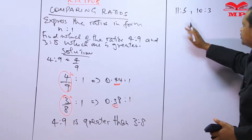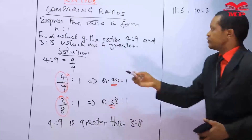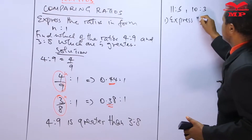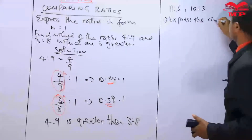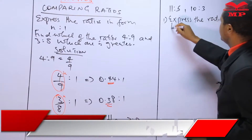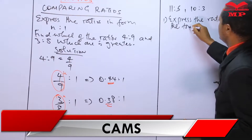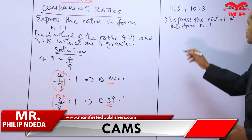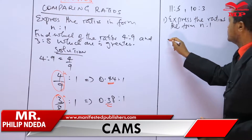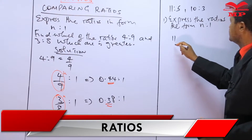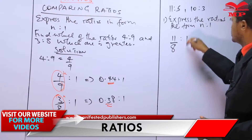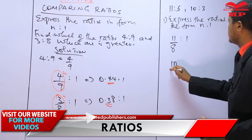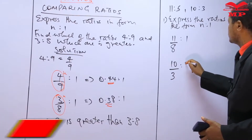Step one: express the ratios in the form N to one. We begin with the first ratio, which is eleven over five to one. The other one is ten over three to one.